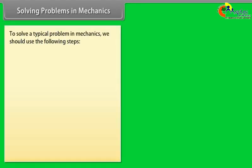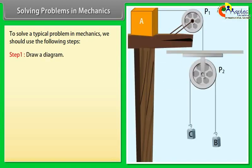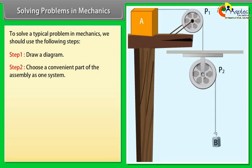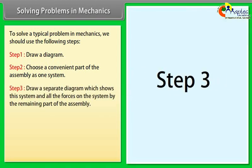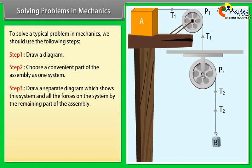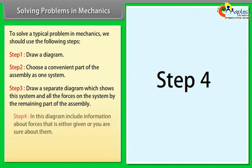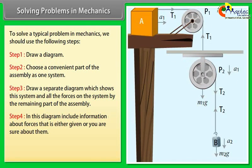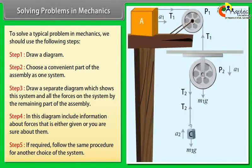To solve a typical problem in mechanics: Step 1 — draw a diagram. Step 2 — choose a convenient part of the assembly as one system. Step 3 — draw a separate diagram showing the system and all forces acting on it. Step 4 — include all given or known force information in the diagram. Step 5 — if required, follow the same procedure for another choice of system.